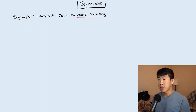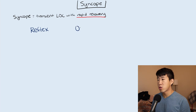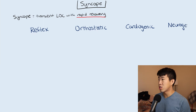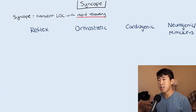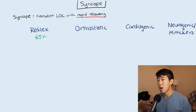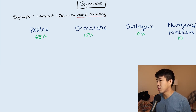There are three big buckets to consider when talking about syncope: reflex syncope, orthostatic, and cardiogenic. There is also a fourth category — neurogenic and mimickers. In terms of frequency, reflex syncope is the most common cause, accounting for 65% of cases. Orthostatic is seen about 15% of the time. Cardiogenic is 10%, and neurogenic and mimickers is also about 10%.